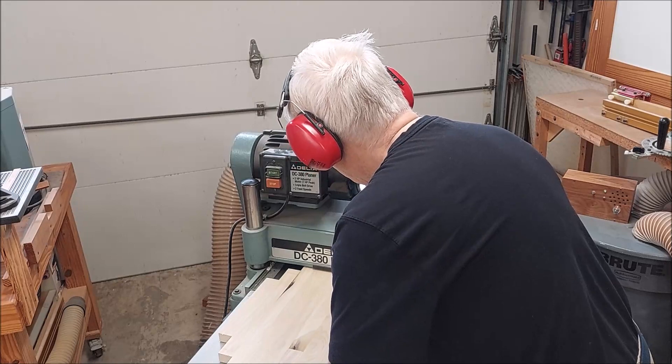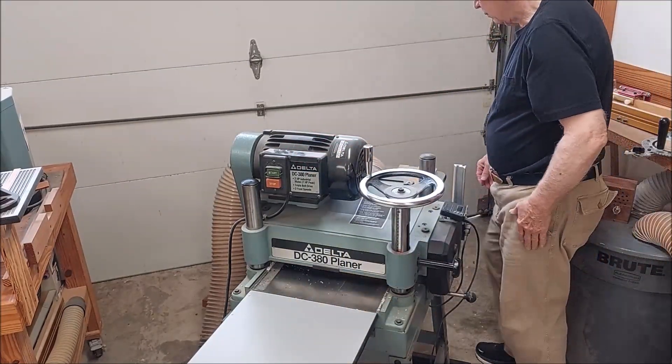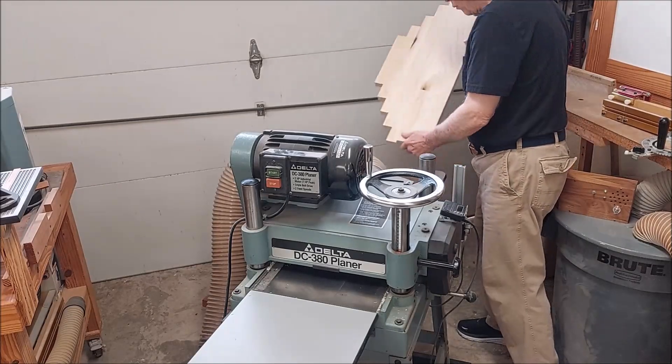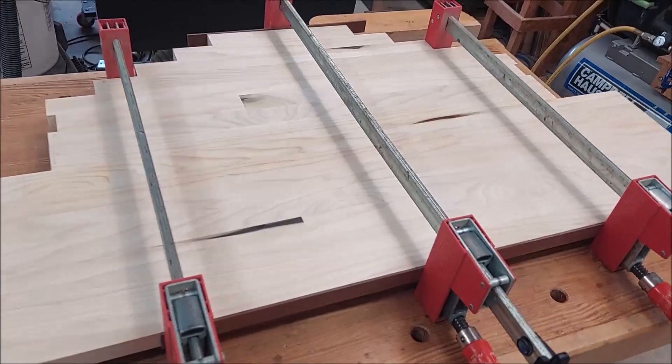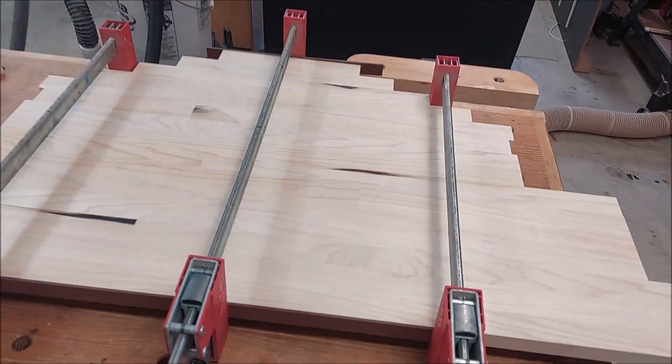The upper half and lower half of the desktop were glued up separately and put through the planer to even them out. Here the two halves of the desktop are being glued together and clamped.